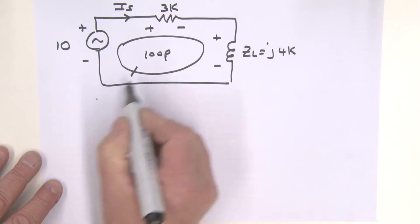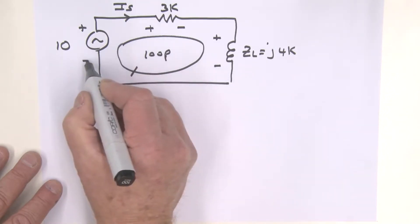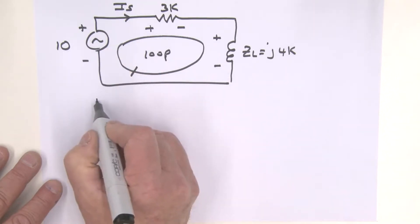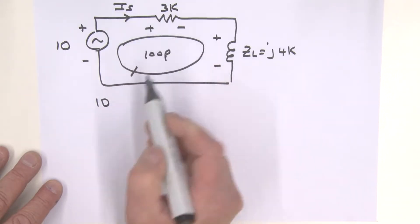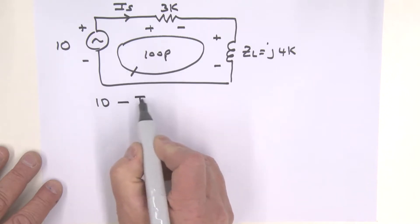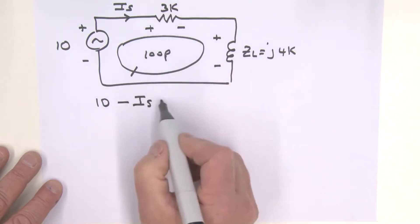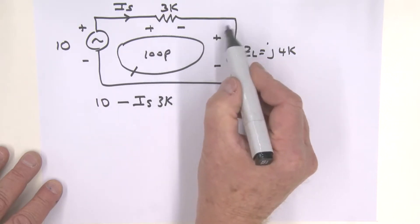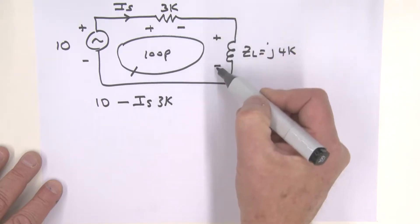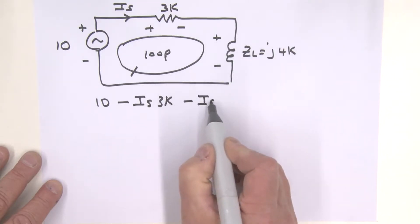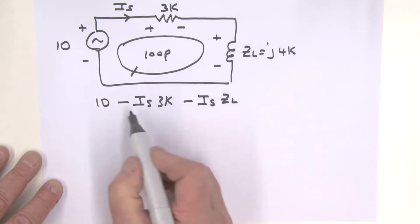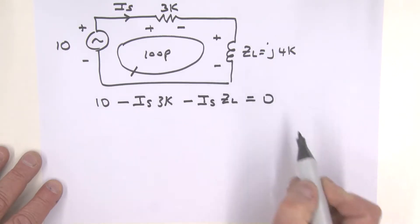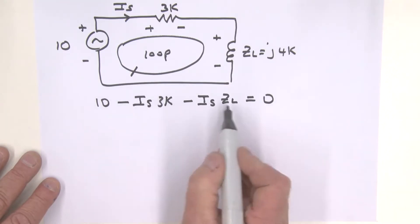So what we have then, coming here we go up minus plus 10 volts. We come across our next component, we're dropping because it's a plus minus, we said that's a minus IS times that 3K. To our last element, once again it's going plus minus, we're dropping in polarity, we call that a minus, and that's IS times ZL for that voltage, and this is all equal to zero.